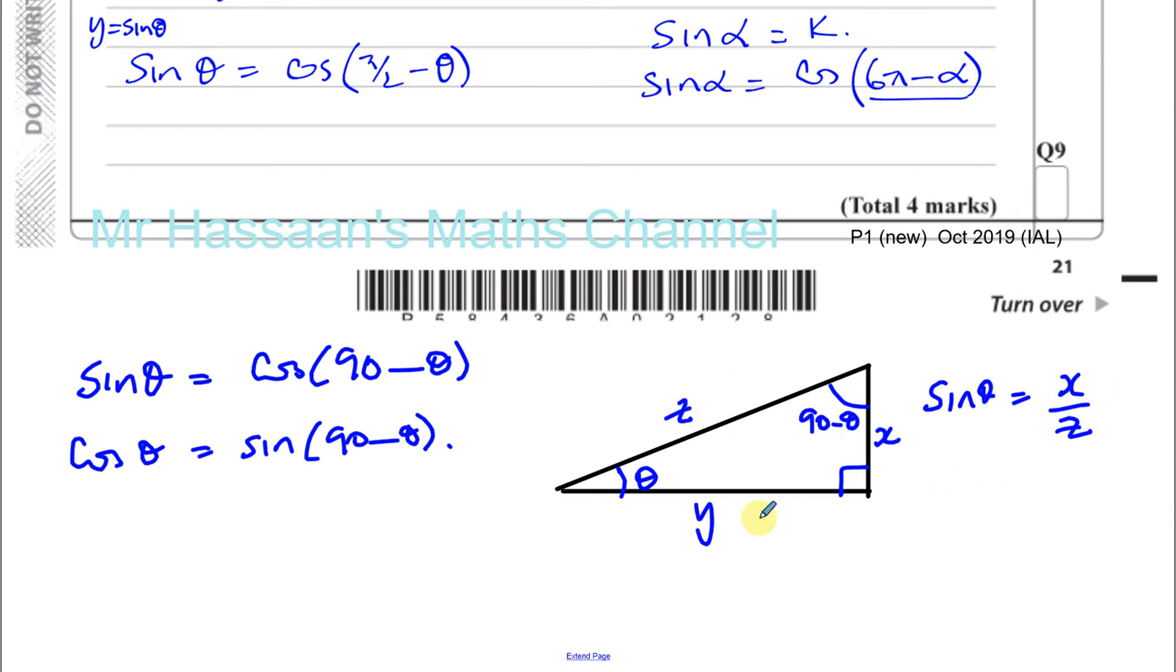And if we think about it, the cosine of this angle here, 90 minus theta, is also equal to x over z because this is adjacent over hypotenuse. So therefore, sine theta is the same as cosine of 90 minus theta. So that's where that rule comes from.